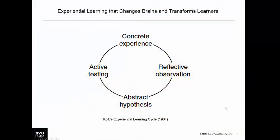Several years ago, there was a researcher named David Kolb who proposed that learning happens in a cycle. We have a concrete experience, we reflect, have a reflective observation about that experience, we formulate hypotheses about our learning, and then we test those hypotheses. This might seem a little nebulous, but if we put a specific example to this, suppose we're trying to learn a language.